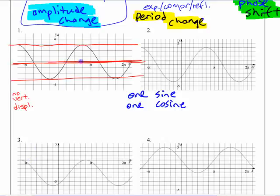There's no vertical displacement. From the middle to the top or the middle to the bottom is 3, so the amplitude is 3. Amplitude equals 3.